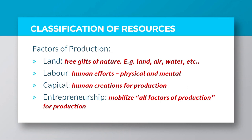Capital includes all human creations, which are used to produce goods and services. Economists often distinguish between physical capital and human capital, where physical capital comprises factories, machines, tools, buildings, and vehicles. Human capital simply encompasses the stock of knowledge and the skills that people obtain from education. With entrepreneurship, it is simply a specialized kind of human resource, which has the ability to mobilize all the factors of production to produce goods and services. The entrepreneur simply bears all the risk of profits and losses by mobilizing these factors of production.